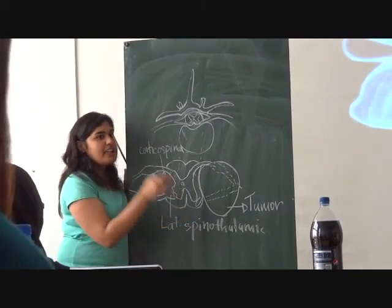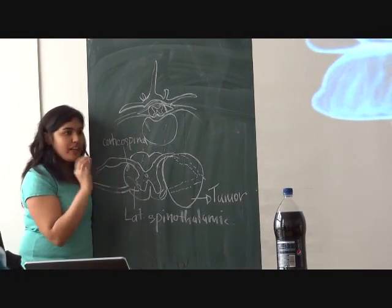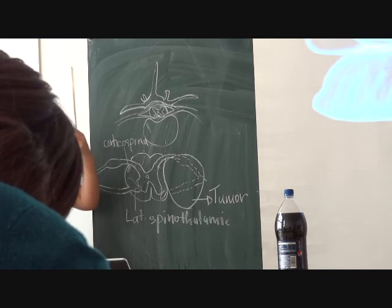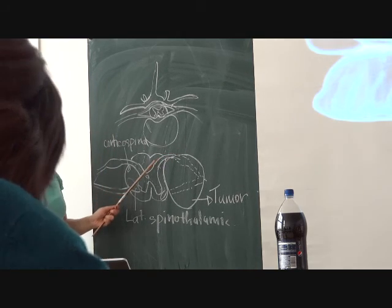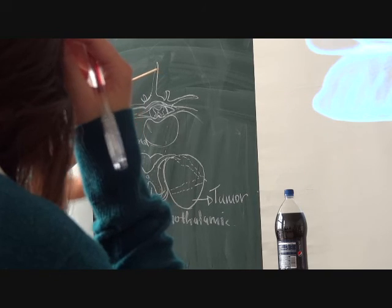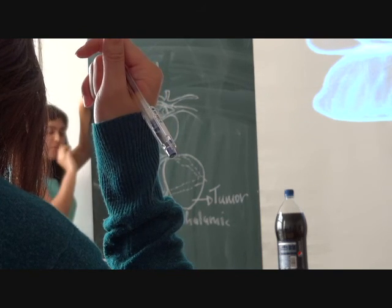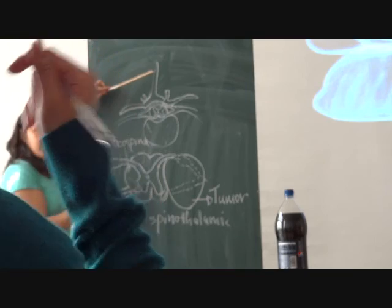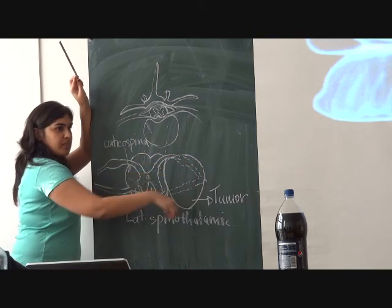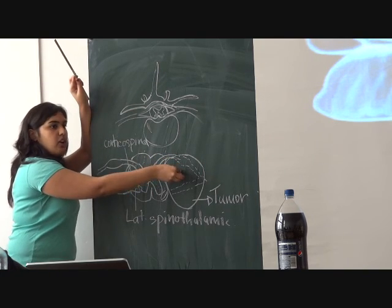The lateral spinothalamic tract is the only tract that crosses over in the spinal cord. We have two sensory pathways: lateral spinothalamic and dorsal columns. Dorsal columns do not cross in the spinal cord — they cross in the medulla. So if there is damage to the medulla, the opposite side loses proprioception and discrimination. But the spinothalamic tract, because it already crosses in the spinal cord, any lesion on one side causes damage to the opposite side.